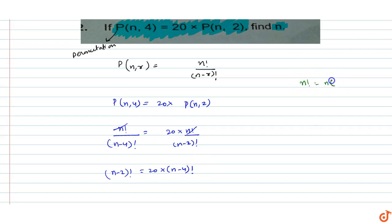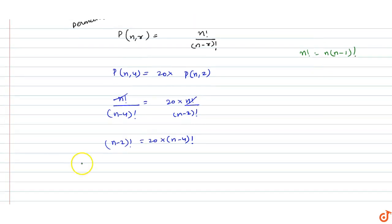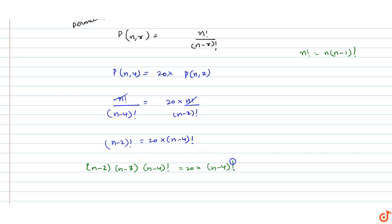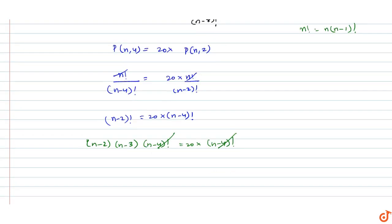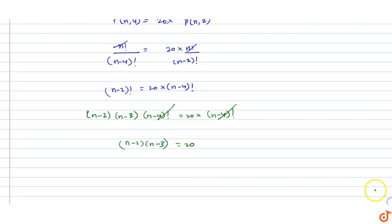We know that n factorial can be written as n into (n minus 1) factorial. So (n minus 2) factorial expands to (n minus 2) into (n minus 3) into (n minus 4) factorial, equals 20 into (n minus 4) factorial. Both (n minus 4) factorial terms cancel out, giving us (n minus 2) into (n minus 3) equals 20.